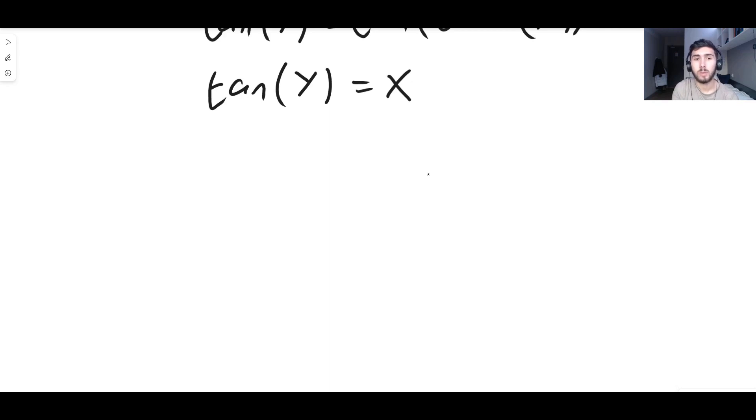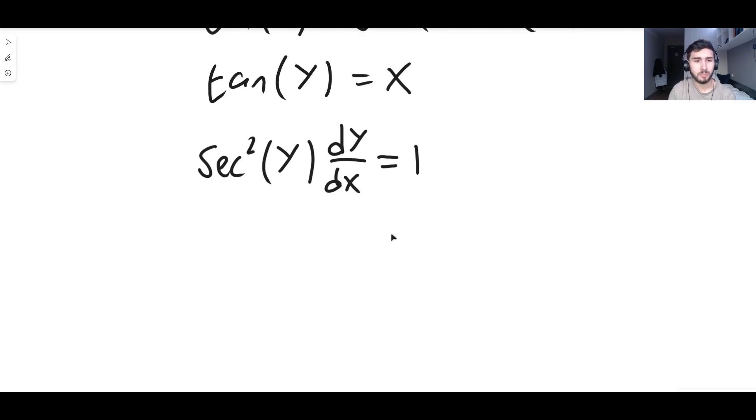The derivative of tan - you might know or might not know - the derivative of tan(x) is sec²(x). So the derivative of tan(y) is sec²(y), and because y is a function of x we need to use the chain rule and that's where the multiplying by dy/dx comes from. I'll also leave a link to the implicit differentiation video in the description. And then we differentiate the right hand side with respect to x. The derivative of x with respect to x is of course nothing other than just the number one.